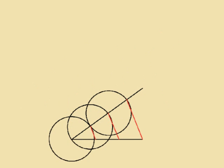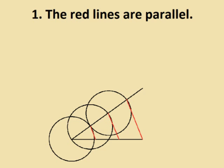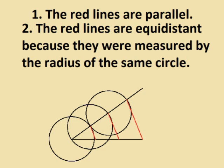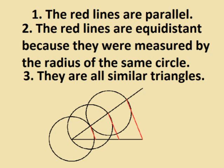Now we have three different line segments that split our first line segment into three equal parts. We can say that they are equal because one, the red lines are parallel, two, the red lines are equally spread apart because they were measured using the radius of the same circle, and three, they are all similar triangles.